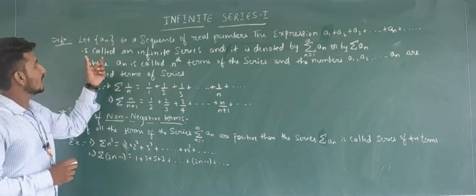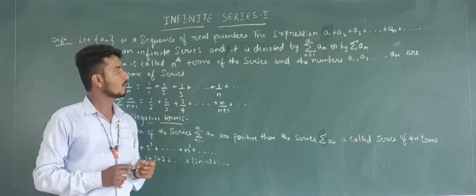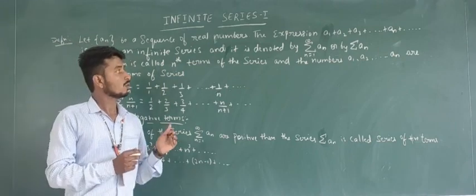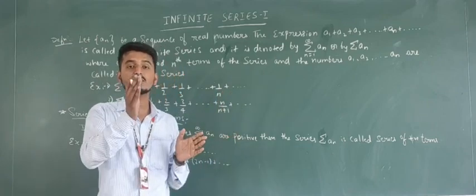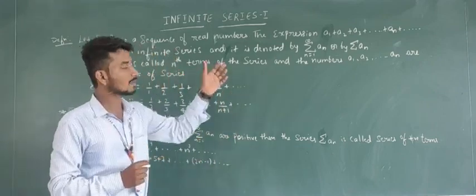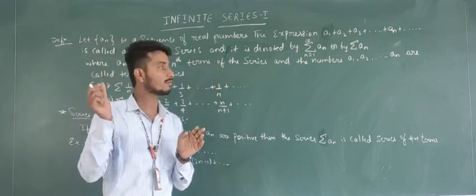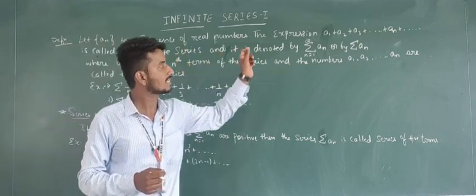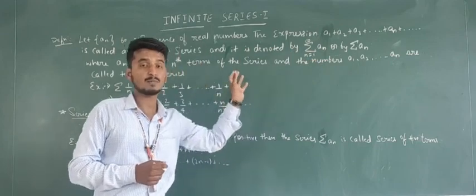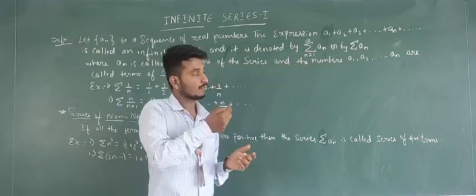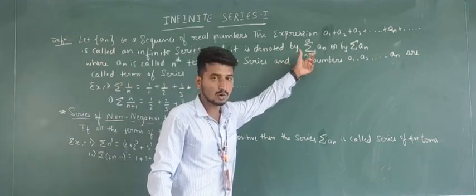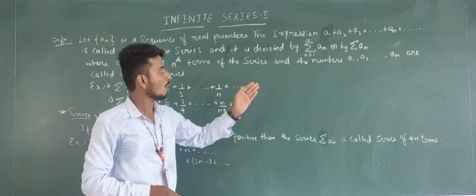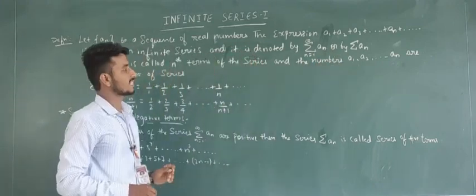Definition: Let {an} be a sequence of real numbers. The expression a1 + a2 + a3 + ... + an + ... is called an infinite series. We can denote this as the summation from n=1 to infinity of an, which equals a1 + a2 + a3 + ... + an + ..., or we can simply denote it by summation of an.